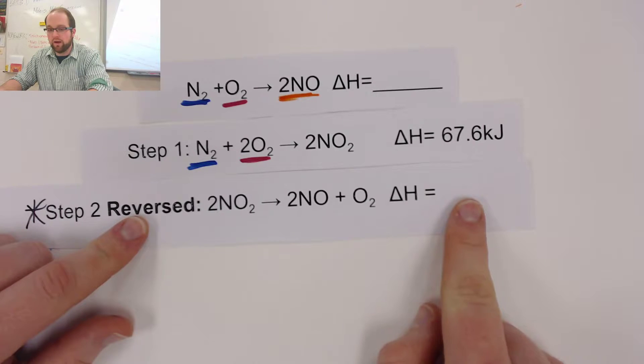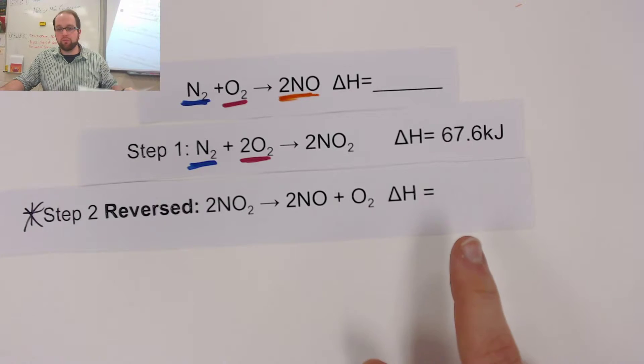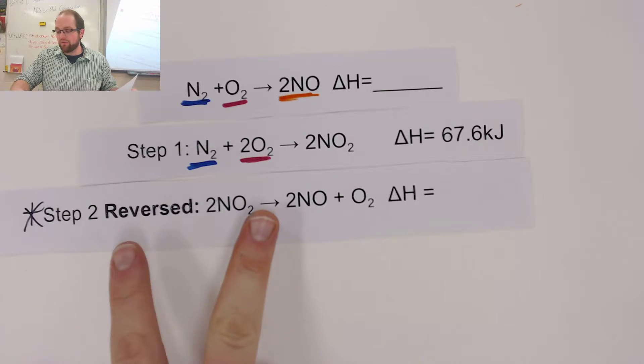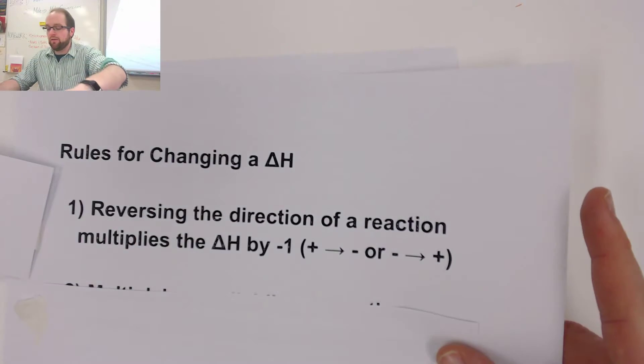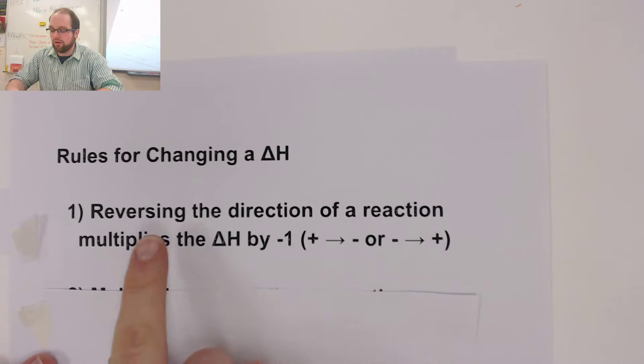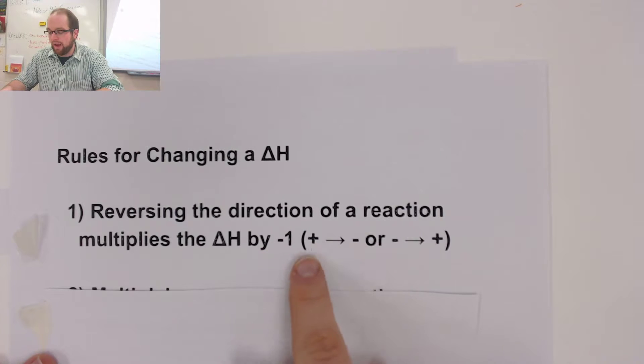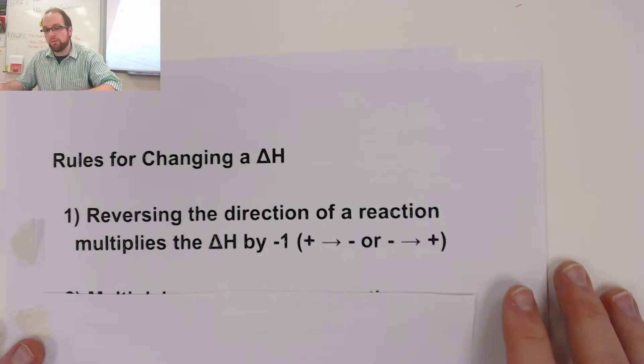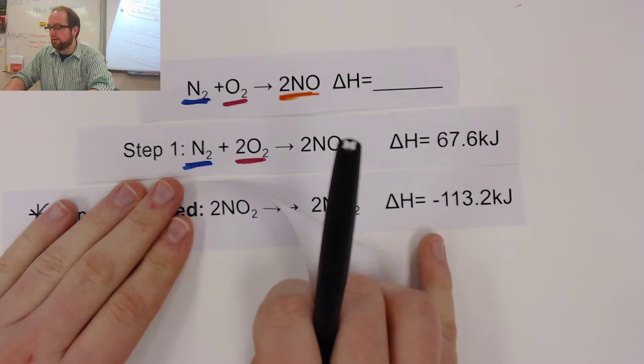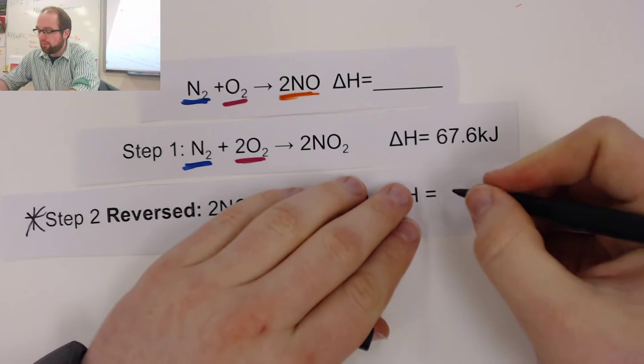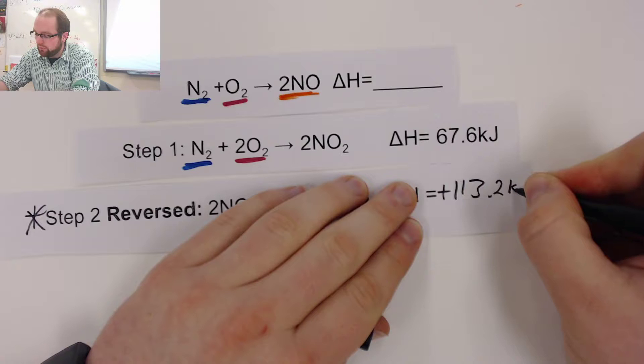Now, the question is, though, what is my new delta H? So, we have to think about some very simple rules for how we can rearrange and change a delta H. When I change a reaction, I therefore must change its delta H. So, our very first step that we're going to take a look at here is that when you reverse the direction of a reaction, you must multiply the delta H by a factor of negative 1, meaning that any positives will become negatives and negatives will become positives. So, when I go to write my delta H here, we can look back and see that we started with negative 113.2. I'm very simply going to multiply that by negative 1. So, it's going to become positive 113.2 kilojoules.